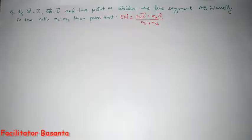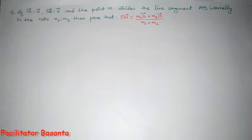If OA vector is A vector, OB is B vector, and the point M divides the line segment AB internally in the ratio M1 is to M2, then prove that OM vector equals M1·B vector plus M2·A vector divided by M1 plus M2.